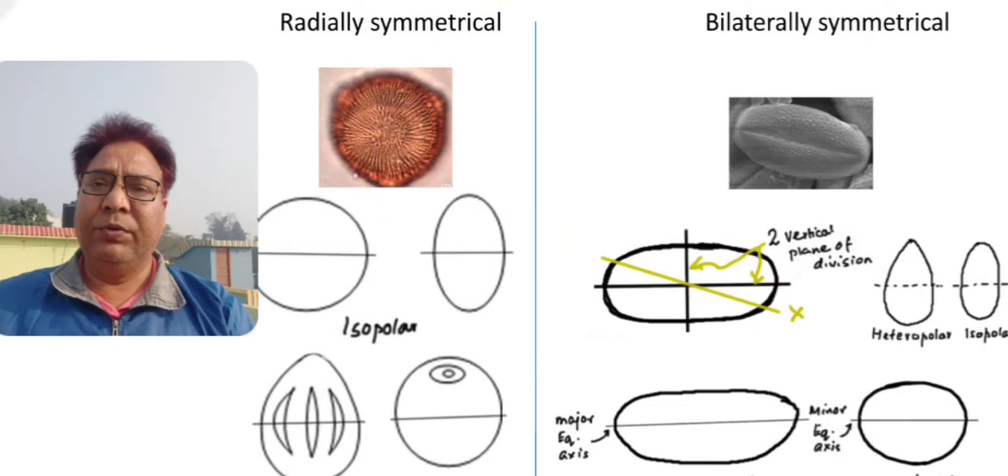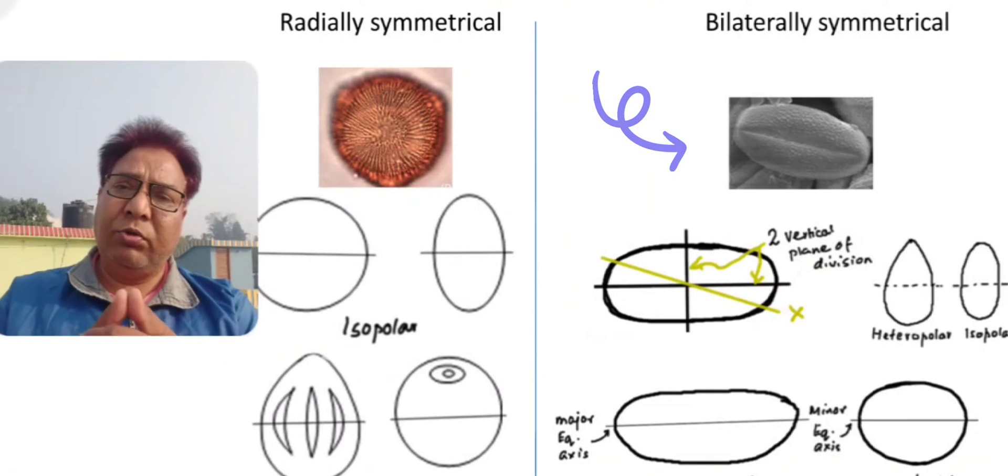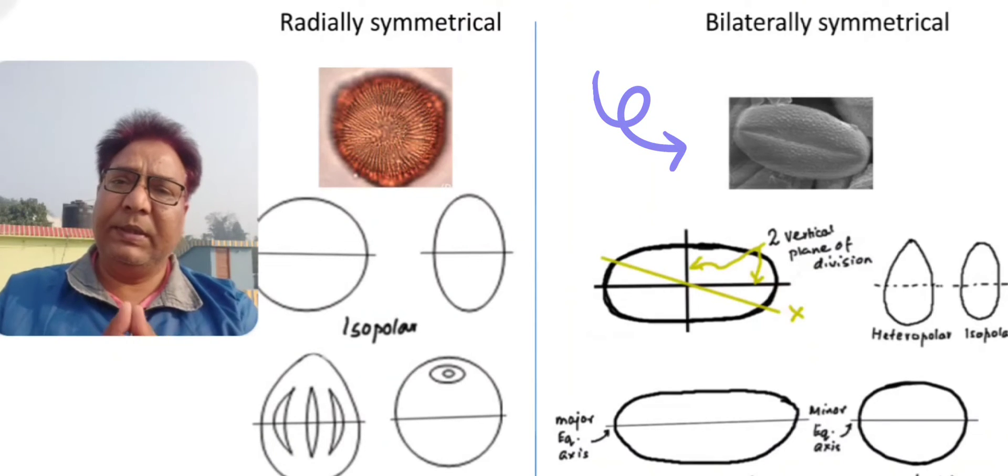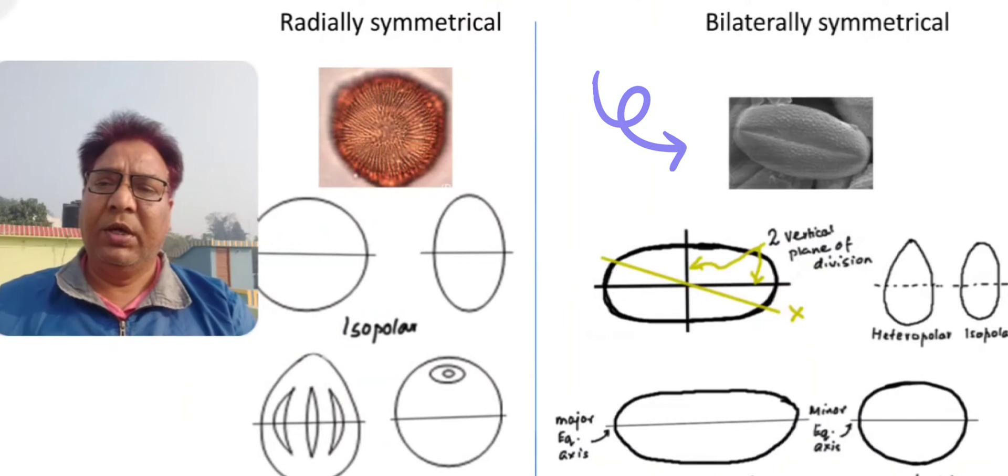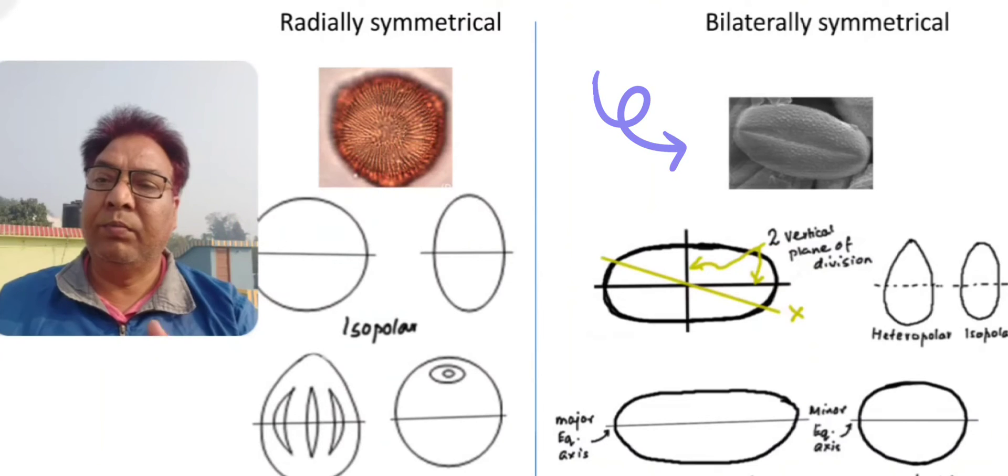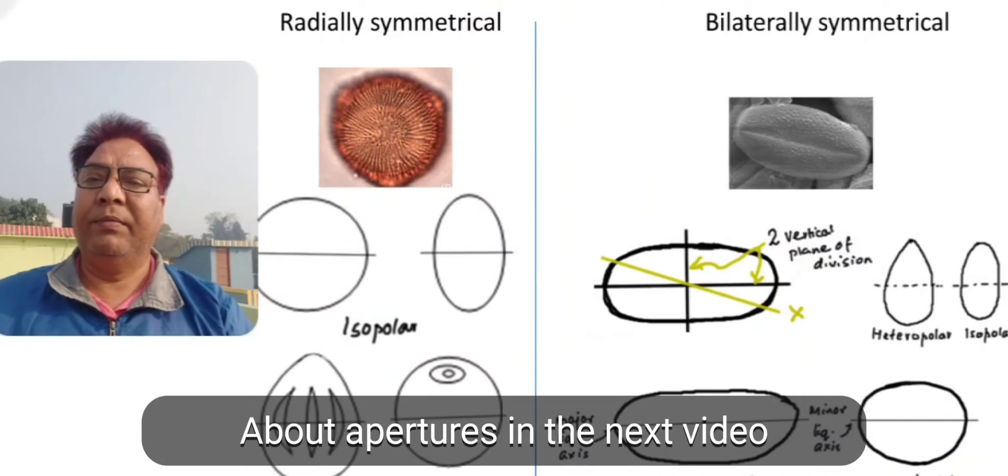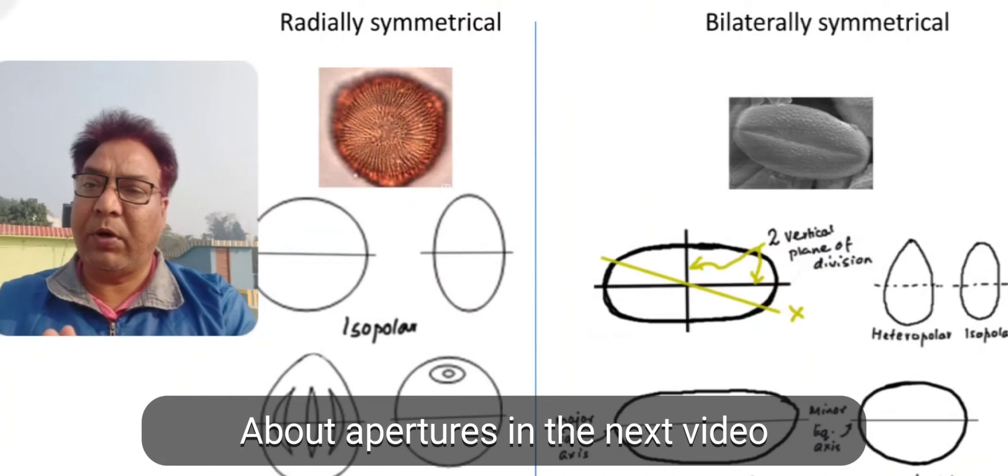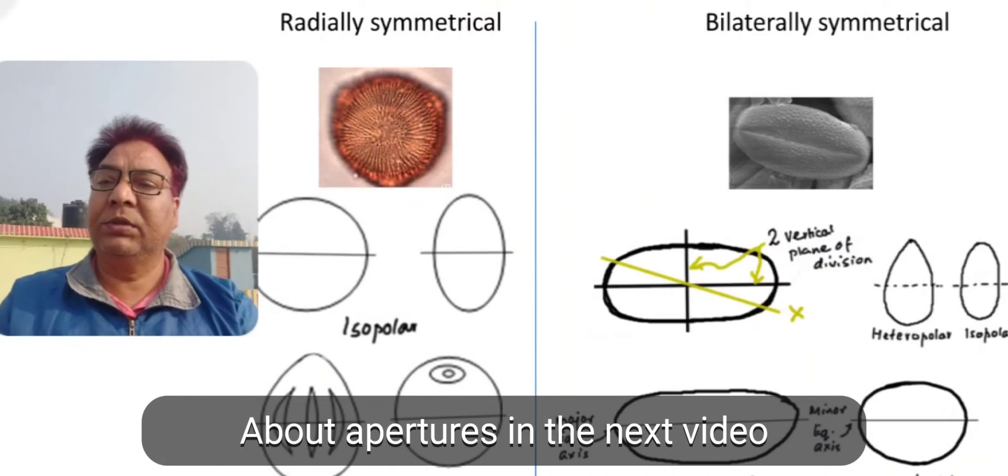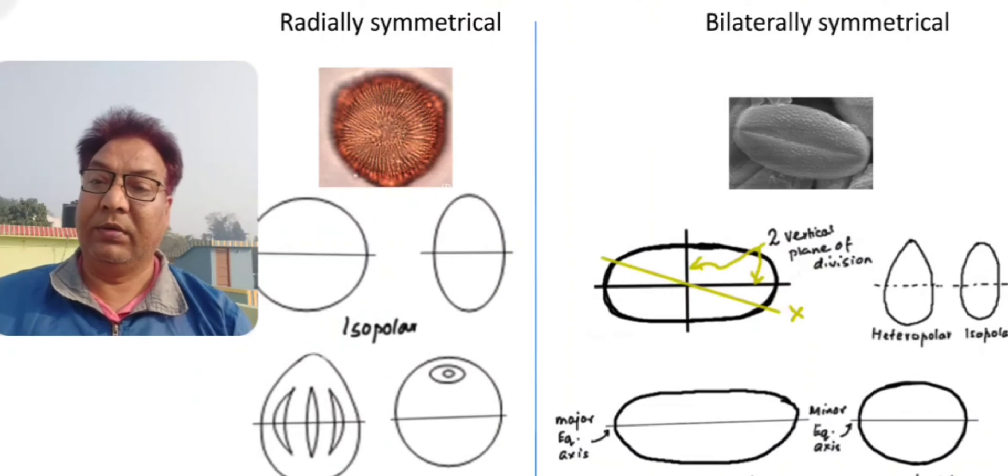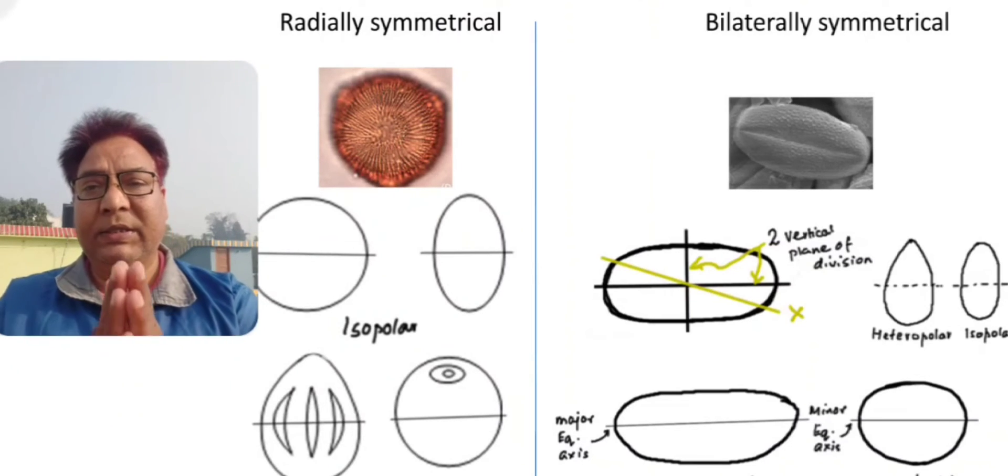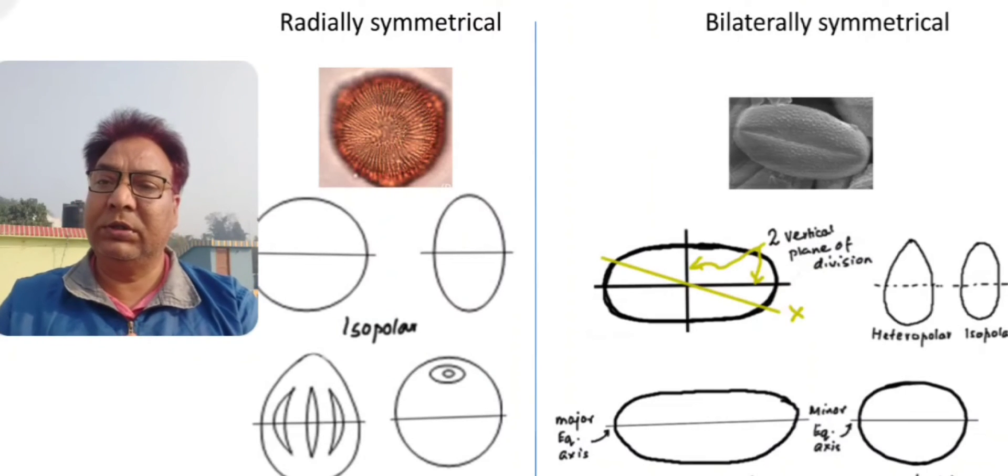In the right panel, you are seeing the bilaterally symmetrical spore. This is also a polar view. This is possibly the sulcus type of aperture or it may be a monolete. Monolete is present on the proximal pole, a furrow-like aperture. Sulcus is also a single furrow-like aperture, monosulcate, present on the distal pole.